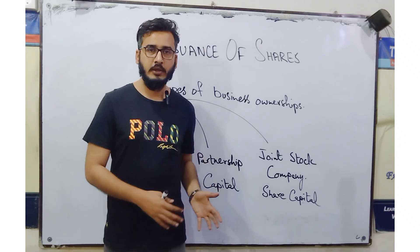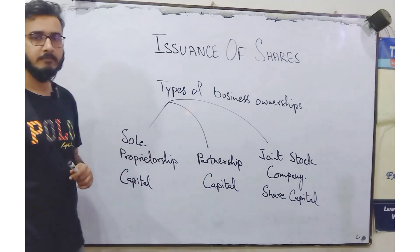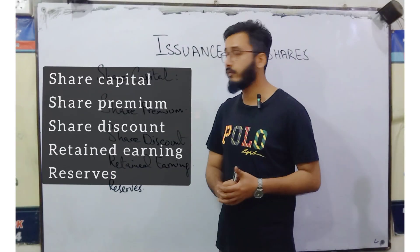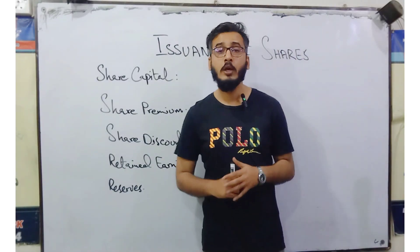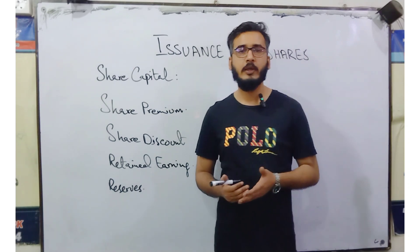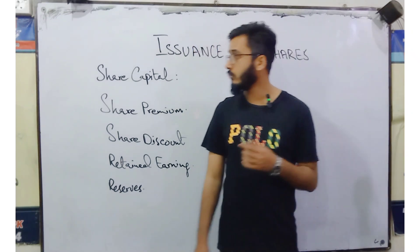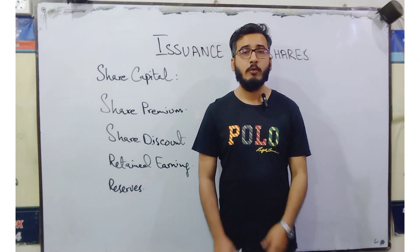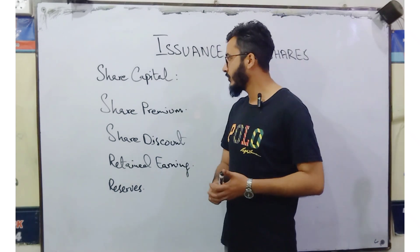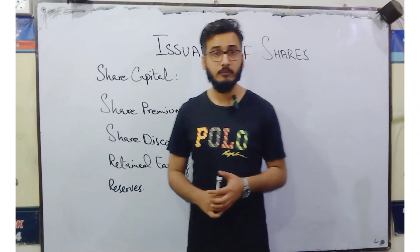Now let us know more theory about this and then we will move to the entries. These are the parts of equity — equity has five parts. In ordinary businesses, sole proprietorship, and partnership, we record just by one name and that is 'capital.' But here, equity has five parts: number one is share capital, then share premium, share discount, retained earnings, and reserves.